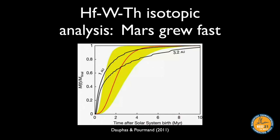The same type of Hf-W analysis done on Martian meteorites suggests that Mars actually grew fast, finishing within about five to ten million years. In contrast with Earth, Mars's growth was completed quickly. Growth curves that match Mars's isotopic measurements confirm this, whereas Earth wasn't finished for another 30–100 million years.